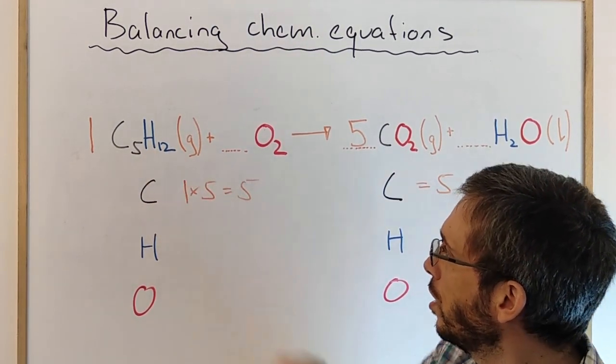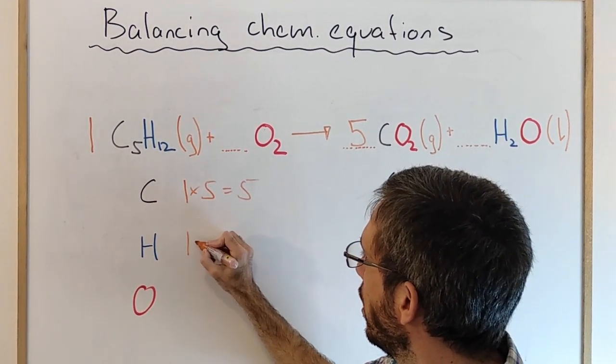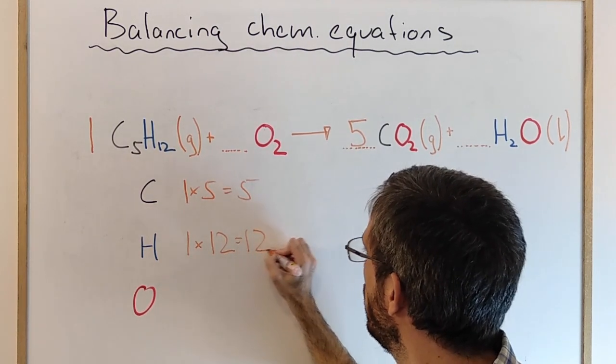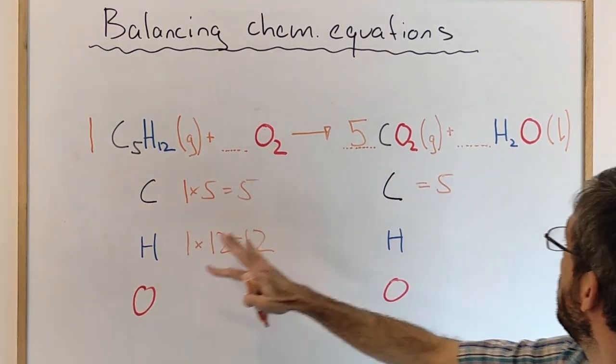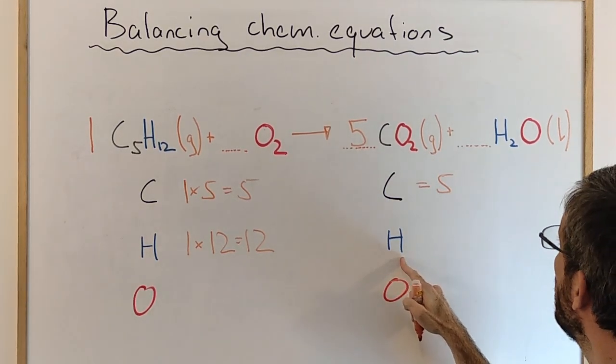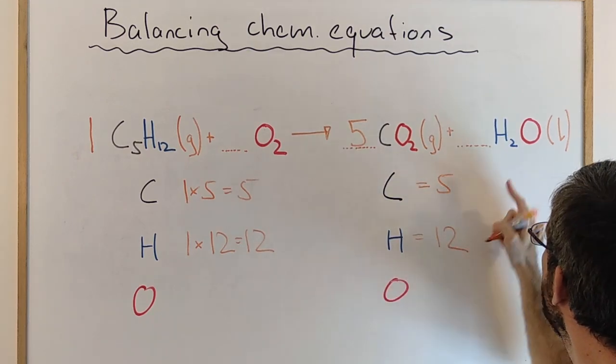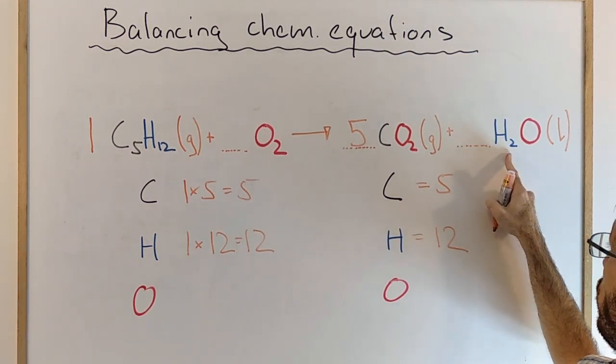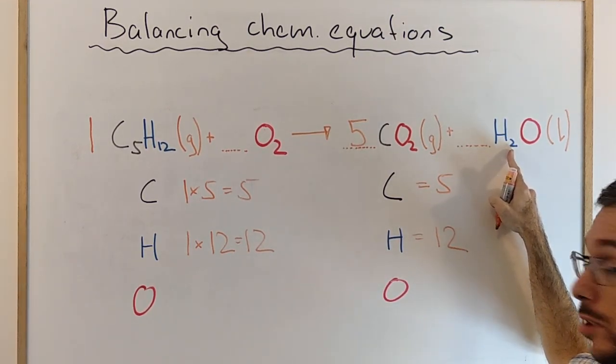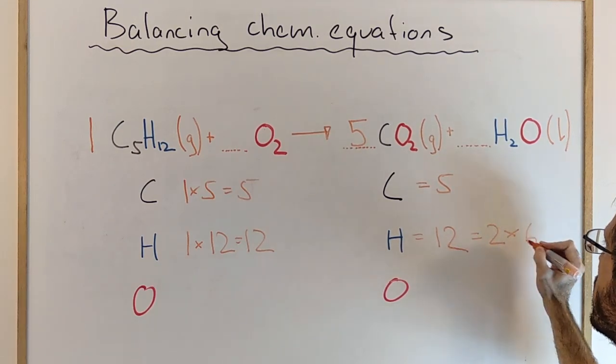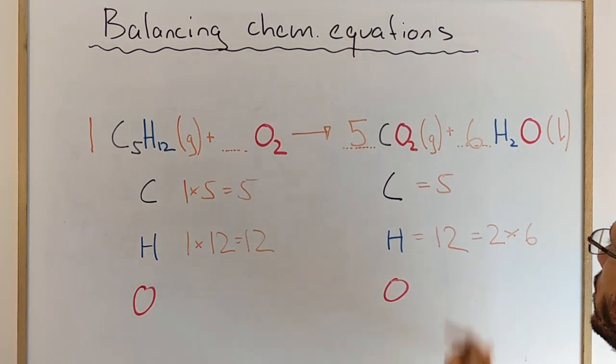I'm going to go to the next one: Hydrogen. I have 1H₁₂, so I have 1 times 12 equals 12 hydrogen on the left, meaning I need 12 hydrogen on the right. Here I have H₂, so 2 in each molecule. Basically 2 times how much is 12? 2 times 6 is 12, so I know there is a 6 here.